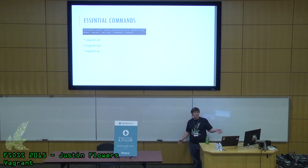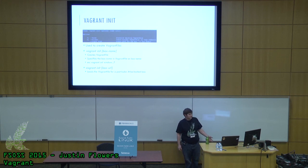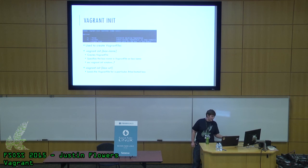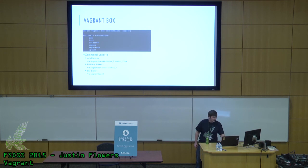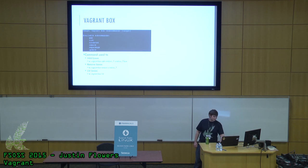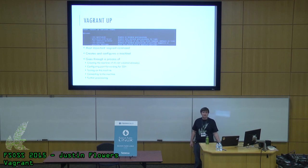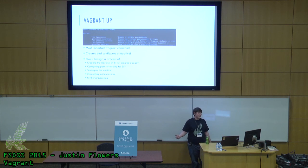The essential commands you'll need are vagrant init, vagrant box, and vagrant up. The whole job of vagrant init is to create Vagrantfiles. If you call vagrant init and then a box name, it creates an empty Vagrantfile defining that box name. If you do vagrant init with a box URL, you can load the Vagrantfile for a particular Atlas-hosted box. The vagrant box command allows you to manage your boxes — add, remove, and list them. Vagrant up is the most important command: it creates and configures machines, configures port forwarding for SSH, turns on the machine, connects to it, and begins provisioning.